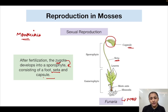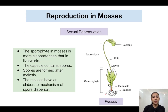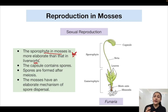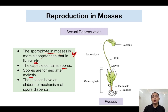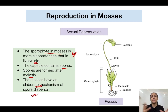The Funeria sporophyte comprises a capsule at the tip, the seta, and the foot attached to the gametophyte. The capsule contains spores formed after meiosis (haploid meiospores), which are then dispersed to give rise to the male and female gametophytes. Mosses have an elaborate mechanism of spore dispersal. The sporophyte of mosses is more elaborate than that of liverworts — this is a very important point.